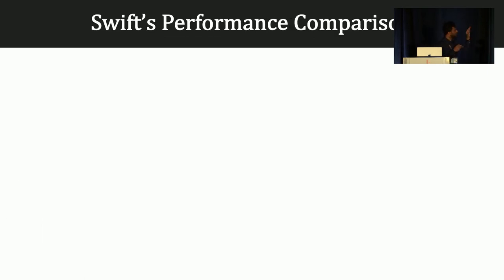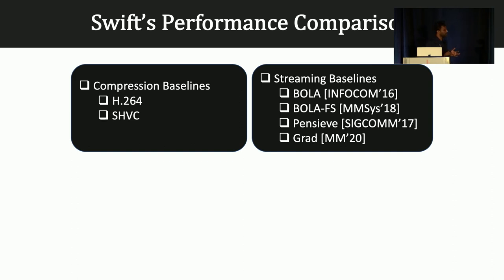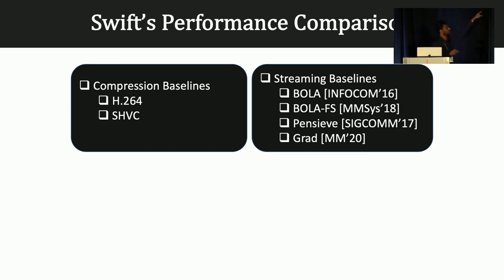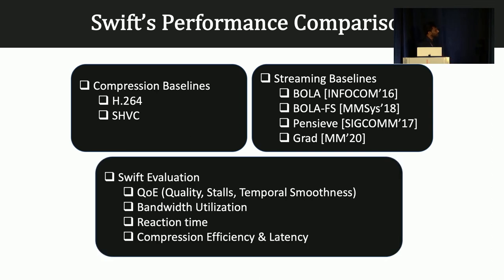We compare Swift with a number of baselines including compression and streaming algorithms. On the compression side, we have H.264, which is used by the majority of current streaming solutions, and SHVC, a form of layered coding built on top of H.264. For streaming, we use four baselines: BOLA (buffer-based), BOLAFS (fast switching by discarding chunks), PENSIEVE (a state-of-the-art learning-based adaptation technique), and GRAD (learning-based adaptation using SHVC layered coding). We evaluate Swift with diverse metrics including overall QoE, quality, stalls, temporal smoothness, bandwidth utilization, reaction speed, and compression-related performance metrics.